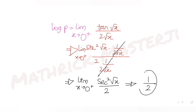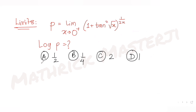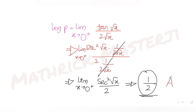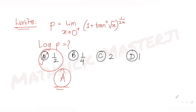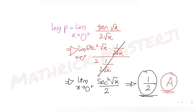Now applying the limit, sec²(0) equals 1 and the denominator is 2, so the answer is one half. That matches option A, which is the correct answer. To summarize: we used trigonometry, then applied L'Hôpital's rule twice — differentiating numerator and denominator separately until we got a determinate form — and then applied the limit to get sec²(0) = 1, giving us 1 over 2.